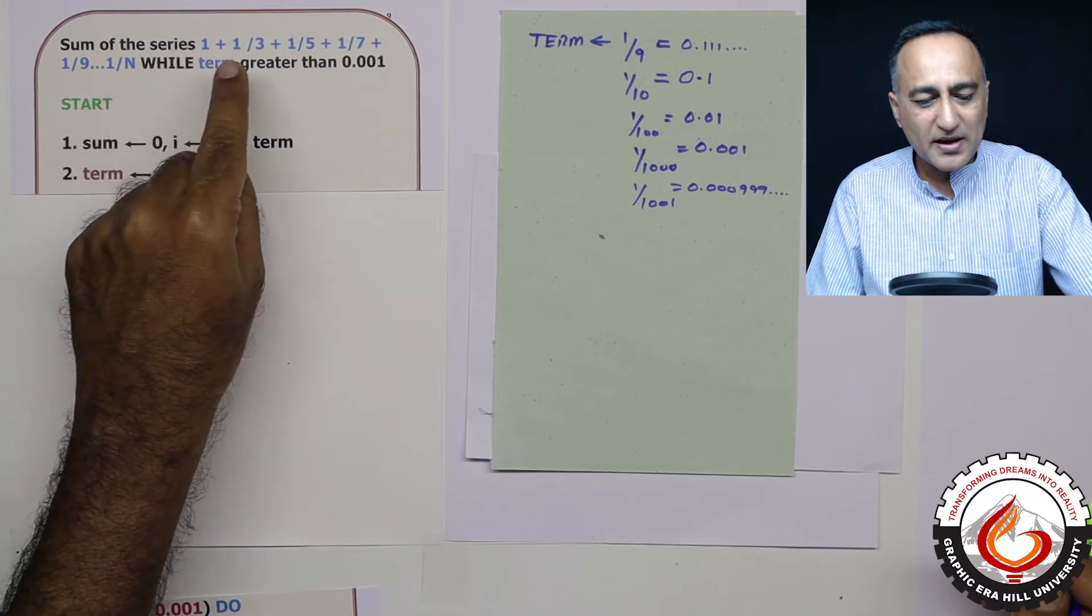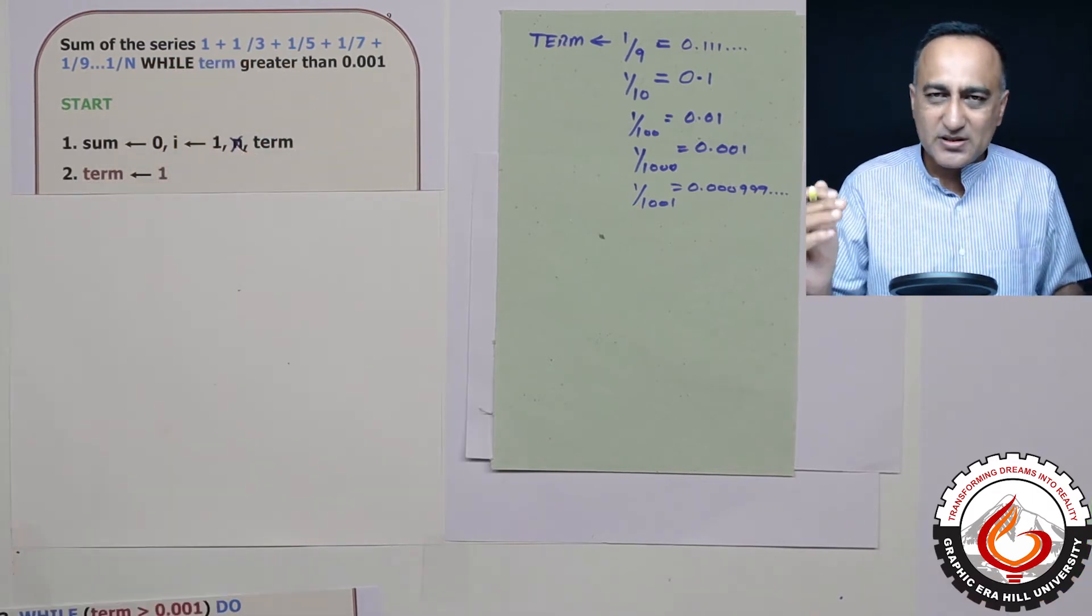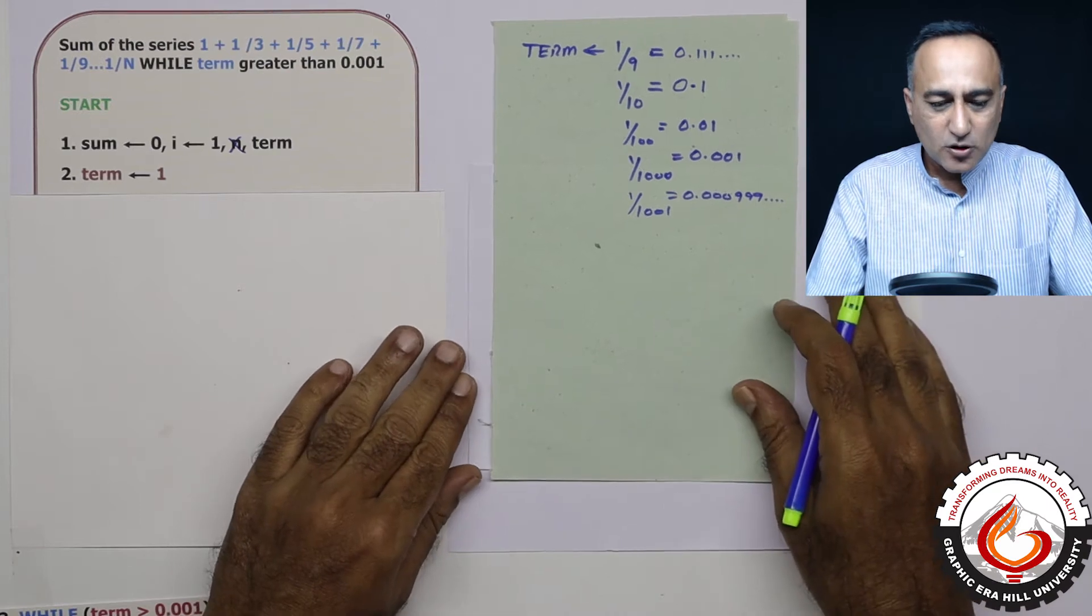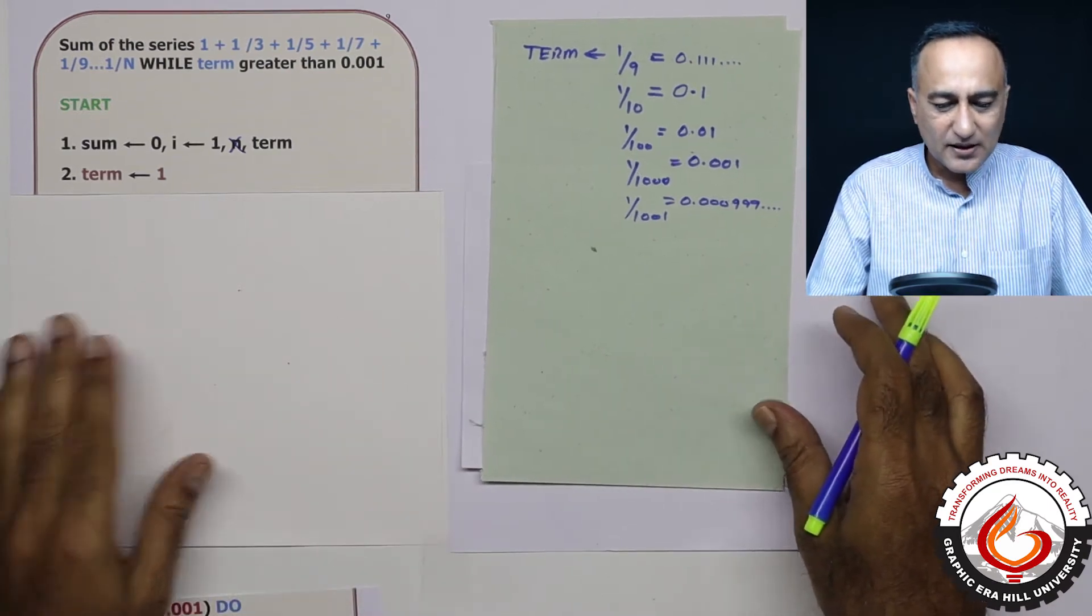That means you need to keep adding 1 by 3, 1 by 5, 1 by 7, whatever is the term to sum. So in order to get a clearer picture, take a look here.